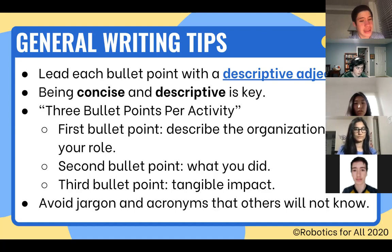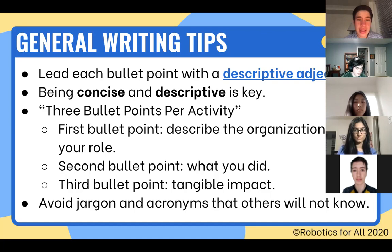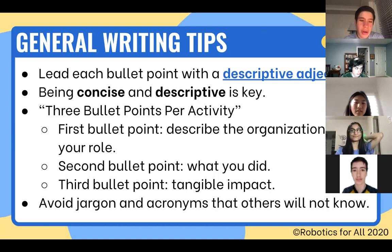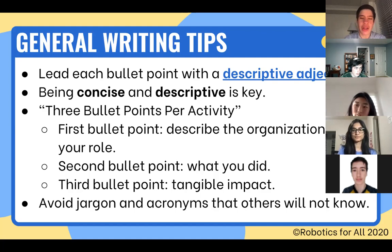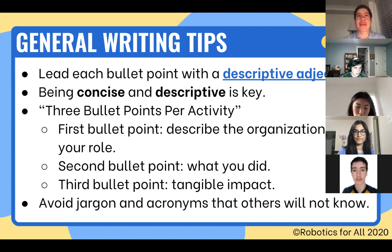Here's a general format — put a maximum of three bullet points per activity. Your first bullet point should describe the organization and your role. For example, not everyone is going to know what Robotics for All is right away, so explain it and state your role. The second bullet point covers what you did, and the third covers tangible impact — how many, how much — numbers that people can contextualize. Also, avoid jargon and acronyms that other people won't know.